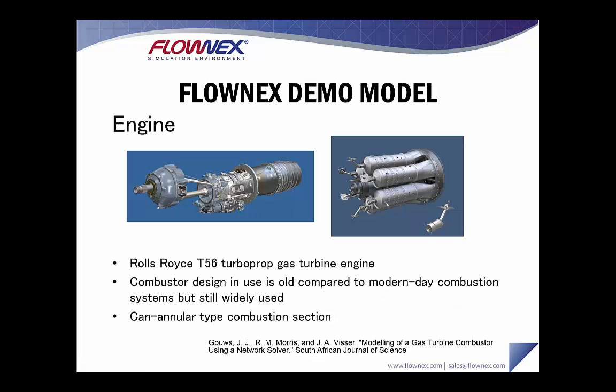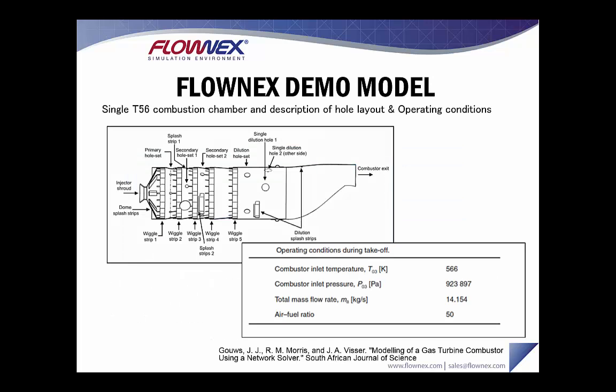I'll briefly go over the engine on which the Flownex demo model is based. It's a Rolls-Royce T56 turboprop gas turbine engine. The combustor design is old compared to modern-day combustion systems but is still widely in use, and it has a can-annular type combustion section. The operating conditions during takeoff are the values we'll be using as boundary conditions for our steady-state analysis.